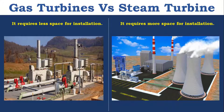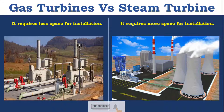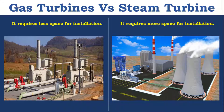In Steam Turbine, if fuel is coal, we need a coal handling unit and ash handling unit. Similarly, for the condenser, we need cooling towers. To install all these, we need more space for installation. Whereas in Gas Turbine, all components are connected to a single shaft and are compact, so we need only less space.